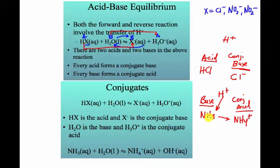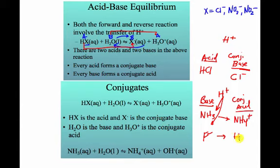Another example of a base would be something like fluoride. I don't really think about the fluoride ion as a base, but it will take a hydrogen ion. What it makes is a conjugate acid — it makes HF. So keep that in mind: acids and bases create conjugates of each other.